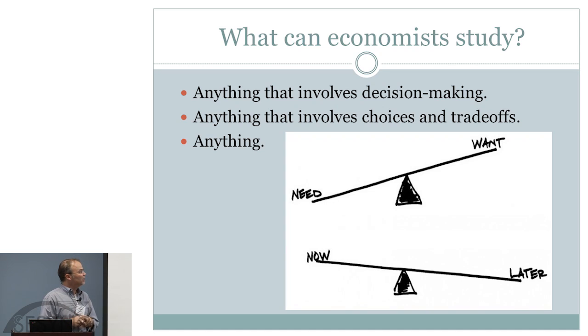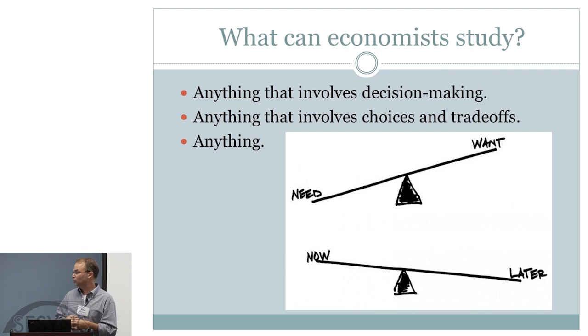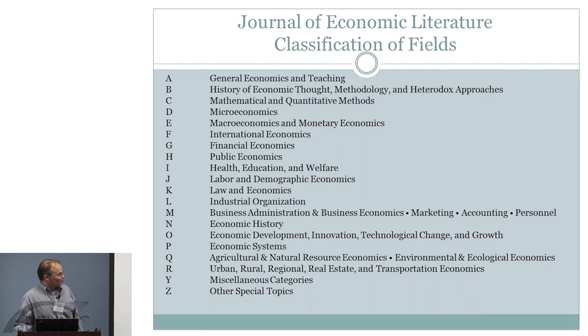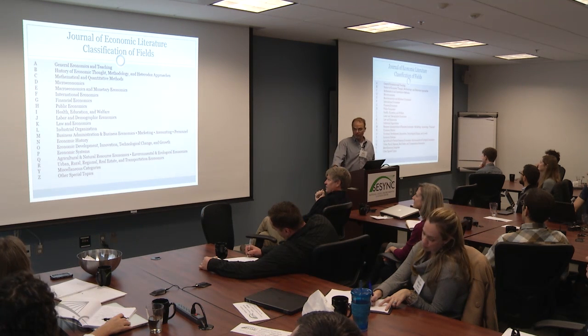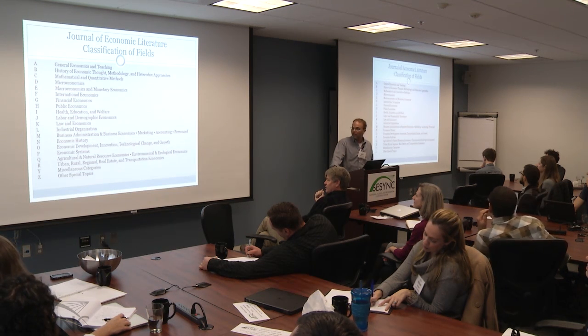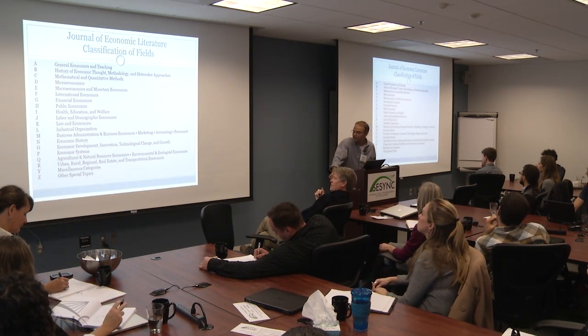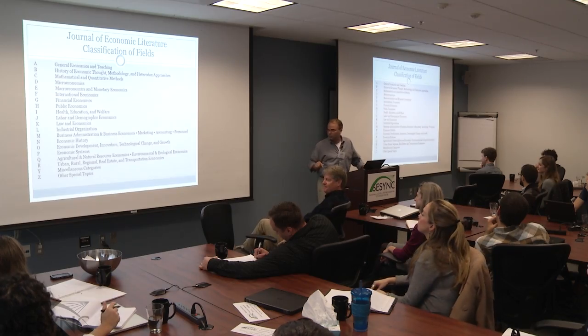What can economists study? Anything that involves decision-making, trade-offs, or choices — pretty much anything. The Journal of Economic Literature classification of fields in economics covers nearly all the letters of the alphabet. The discipline of economics is very broad. We're in queue — agricultural and natural resource economics, environmental and ecological economics. The difference between environmental economics and ecological economics is an interesting topic we can address during the week.